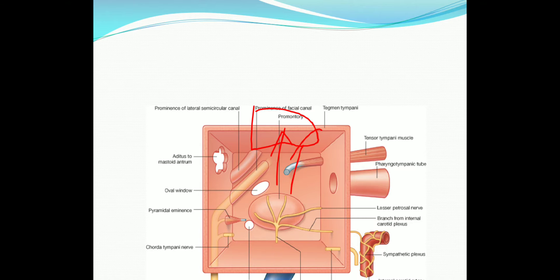The second route of spread is via venous thrombophlebitis, where the bone remains intact.